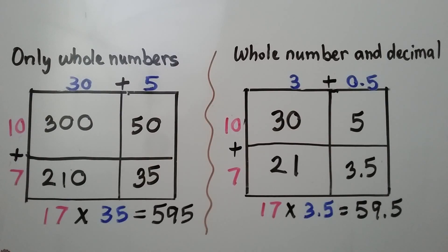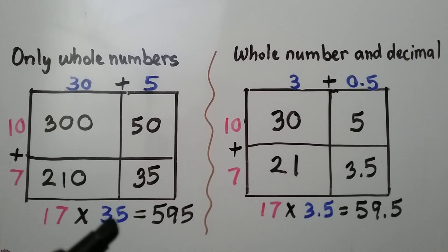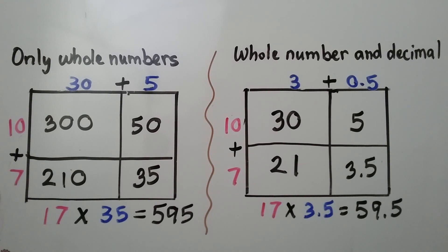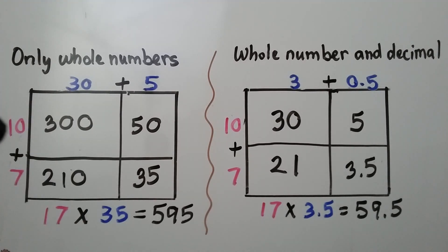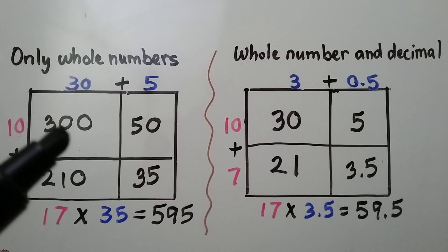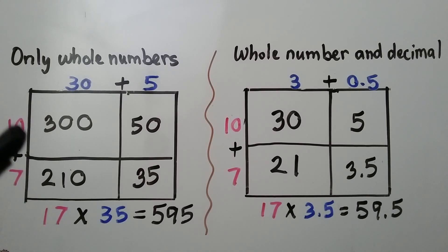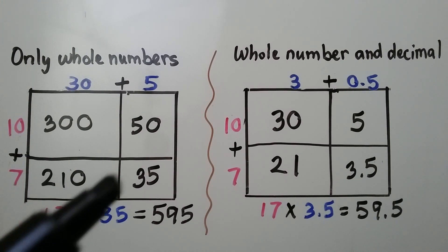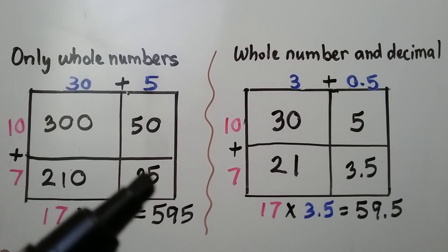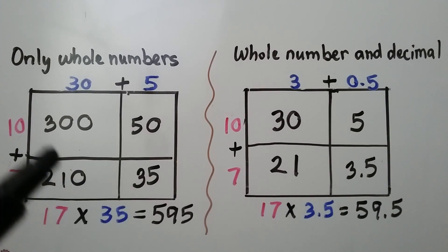Let's try comparing them one more time. Here we have only whole numbers: 17 times 35. We break the 17 apart into a 10 plus a 7, and the 35 apart into a 30 plus a 5. We multiply 10 times 30, which is 300; 10 times 5, which is 50; 7 times 30, which is 210; and 7 times 5, which is 35. We add all the partial products and get 595.